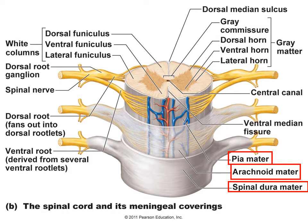This is another diagram of the spinal cord. Once again, the three meningeal layers are labeled: the pia mater, arachnoid mater, and spinal dura. Looking at the spinal cord itself, in the very center is the central canal, where cerebral spinal fluid also flows. You have the ventral median fissure and the dorsal median sulcus, which almost divide the spinal cord in half — not completely through, but enough to distinguish a left and right side.